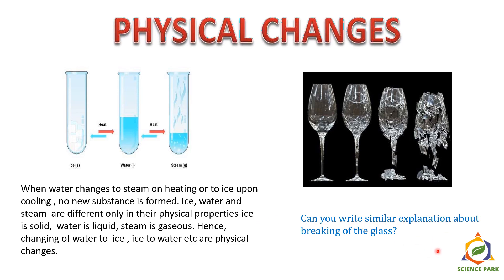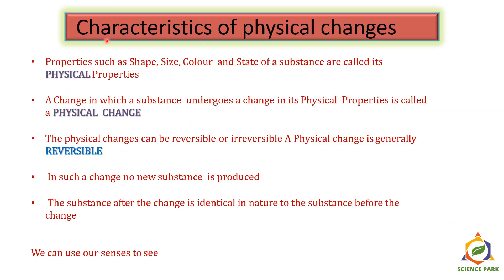Can you write a similar explanation about breaking of glass? Give it a try. Now let's see some characteristics of physical changes. Properties such as shape, size, color, and state of a substance are called physical properties. A change in which a substance undergoes a change in its physical properties is called a physical change. A physical change is generally reversible, no new substance is produced, and the substance after the change is identical in nature to the substance before the change. We can use our senses to observe physical changes.